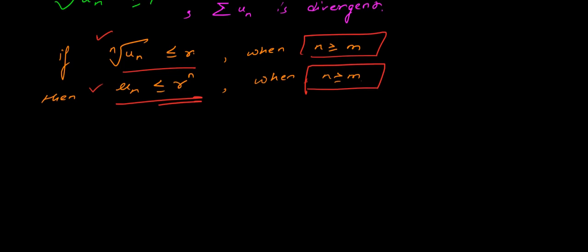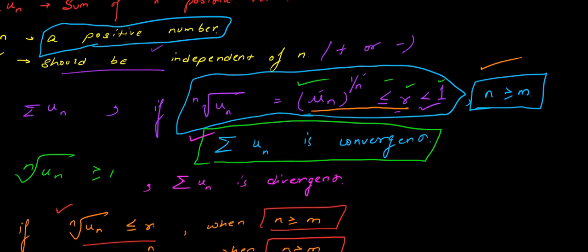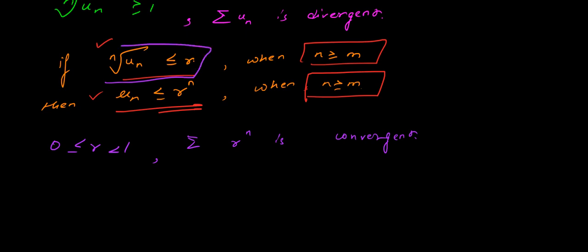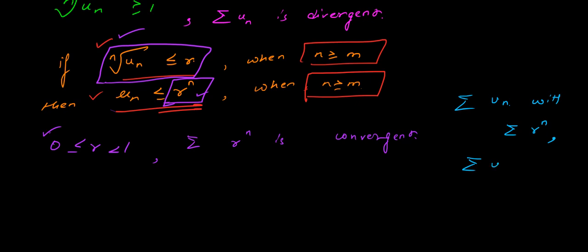There is one more case in this theorem. If r belongs to [0, 1), then the summation of r^n is convergent. Since un ≤ r^n and the summation of r^n is convergent, by comparison we conclude that the summation of un is also convergent. Comparing our summation of un with r^n, we come to know that un is also convergent.